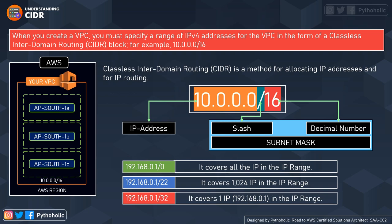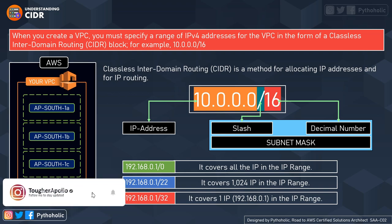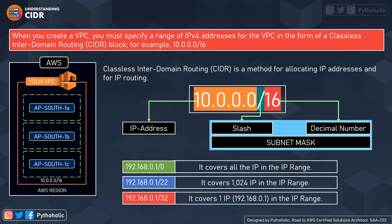The subnet mask — the /16 you see — is what determines how many IP addresses you get out of a CIDR block. Subnetting is the concept of dividing a network logically to create separate space. The subnet mask tells us how the network has been divided and how many IPs are in the subnet. For example, 192.168.0.1/0 covers all IPs in range, /22 covers 1024 IP addresses, and /32 can only cover one IP. The masking value is the determinant factor for IP address coverage.